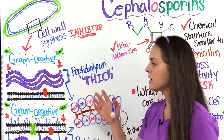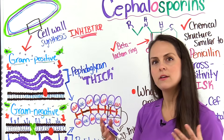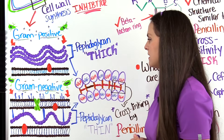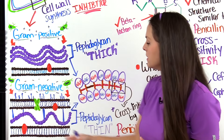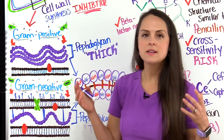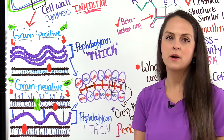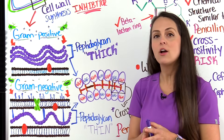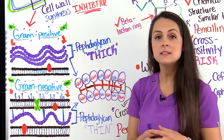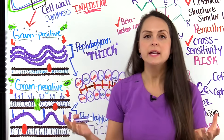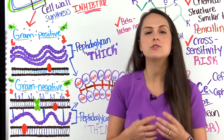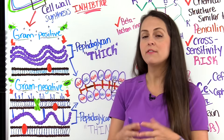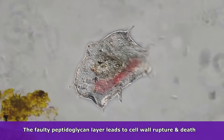Depending on whether we're talking about gram-positive or gram-negative bacteria, the thickness of this peptidoglycan layer can really vary. In gram-positive bacteria, that layer is extremely thick, whereas in gram-negative bacteria they have an outer membrane and then a thinner peptidoglycan layer. Regardless of thickness, this layer is very important because it provides a strong protective shell for the bacteria and helps the cell withstand the intense osmotic pressure occurring within it. If we can affect how this peptidoglycan layer is synthesized, we can cause the cell to lose its strong protective layer and be affected by that intense osmotic pressure, causing it to rupture and die.